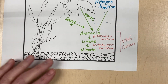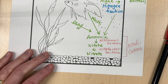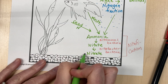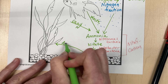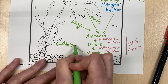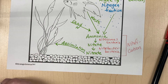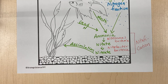Once it's at nitrates, it gets into the plants through assimilation — the same process as on the other page. The plants take it up and use it to grow: green leafy growth from nitrogen in plants.